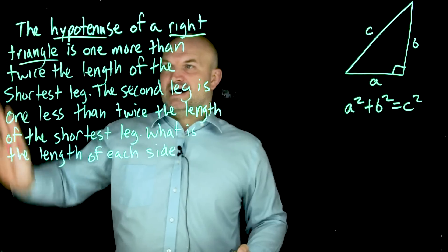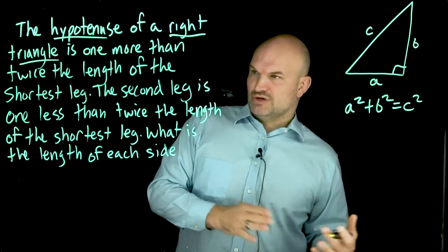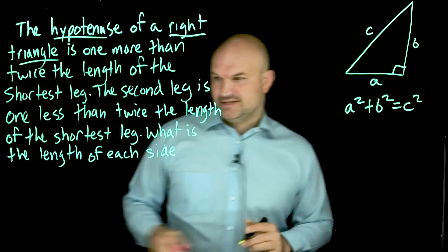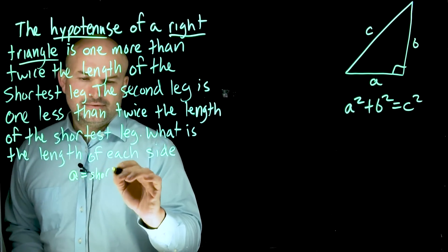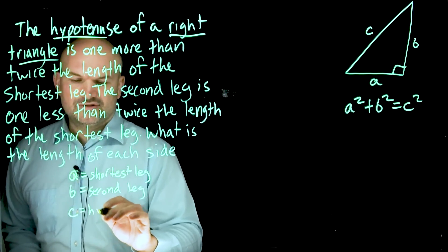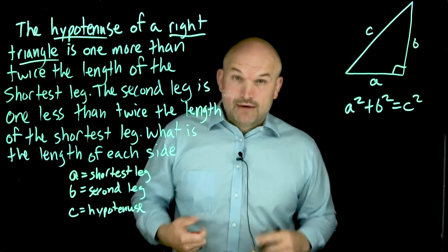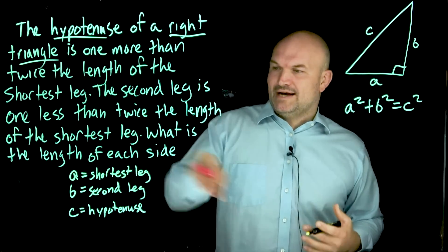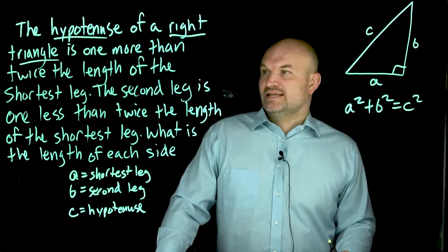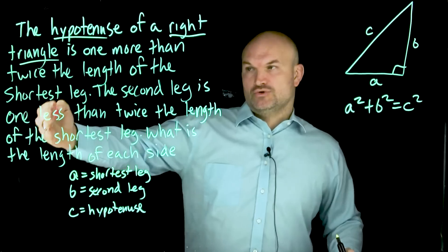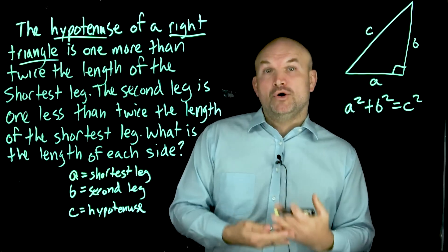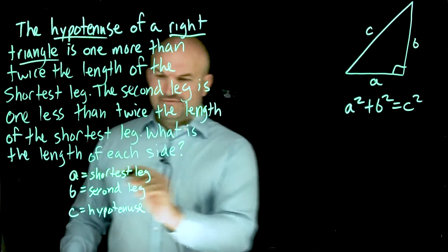We have all this information on the sides. The hypotenuse has a relationship to the shortest leg, and so does the second leg. Let's identify everything: A will be the shortest leg, B will be the second leg, and C will obviously be the hypotenuse. We need to read these words and create algebraic expressions to represent them. The hypotenuse and the second leg are both in relationship to the shortest leg, so I'm going to let the shortest leg equal A.